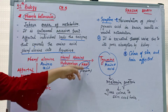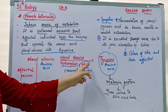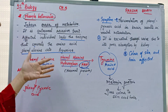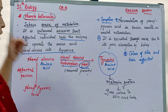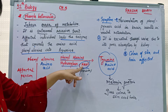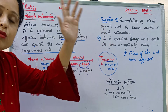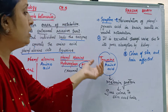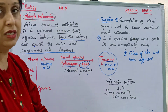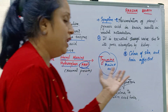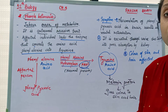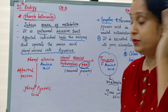In a normal person, the enzyme phenylalanine hydroxylase is synthesized. Phenylalanine, in the presence of this enzyme, is converted into tyrosine. Tyrosine is a very important amino acid for melanin synthesis. Melanin is a protein which gives color to our skin and hair.